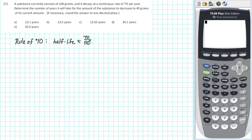In this case the decay rate as a percentage is 7%. So we take 70 and divide by 7 and that comes out to be 10. So the half-life is approximately 10 years.